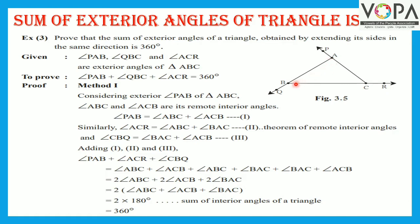Here, triangle ABC is given and all three sides of triangle ABC are extended. So, angle PAB, angle QBC, and angle ACR are the exterior angles of triangle ABC. Now, we have to prove that angle PAB plus angle QBC plus angle ACR is equal to 360 degrees.